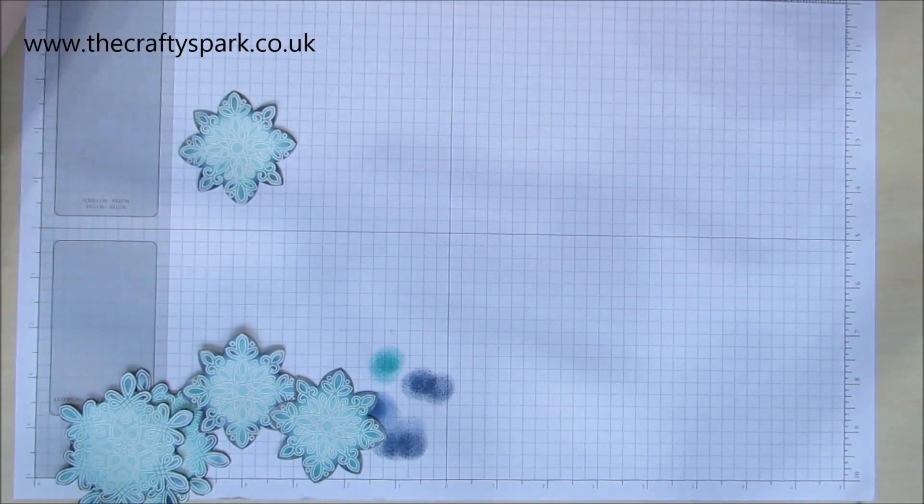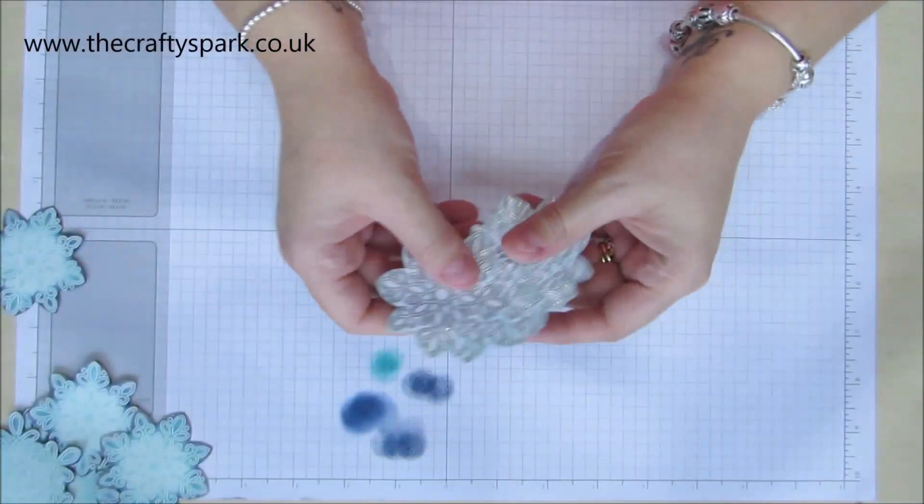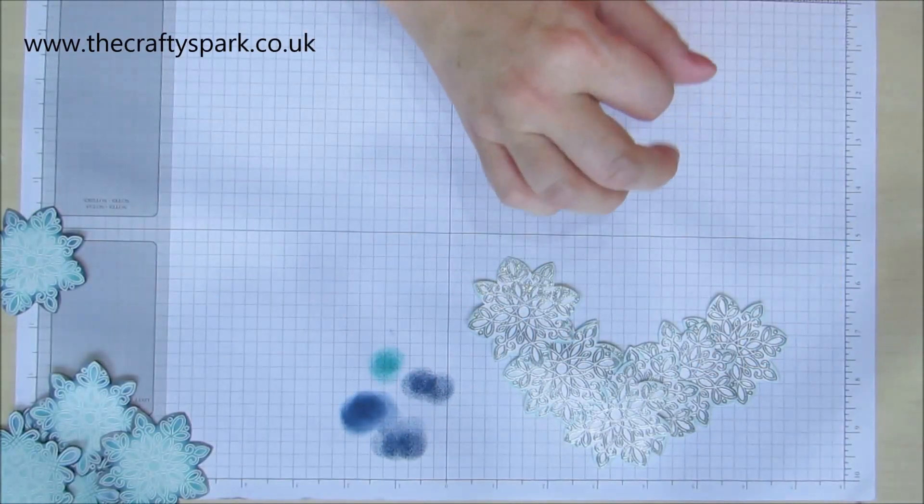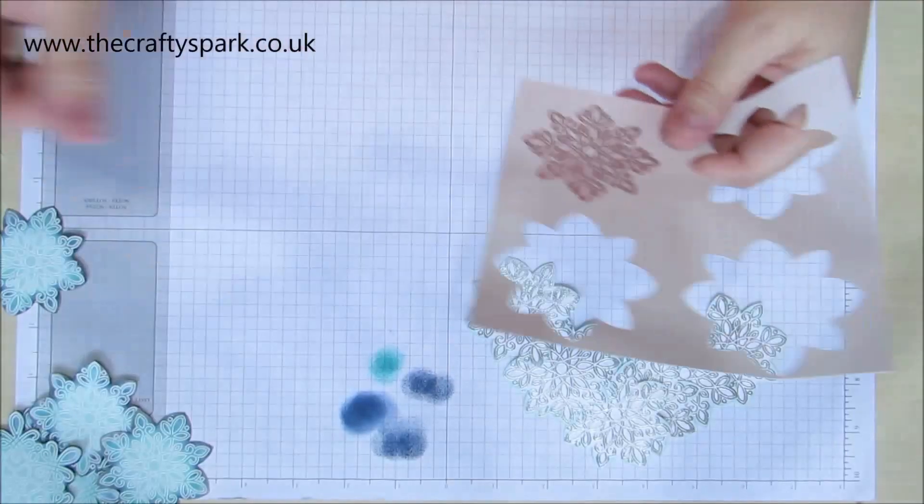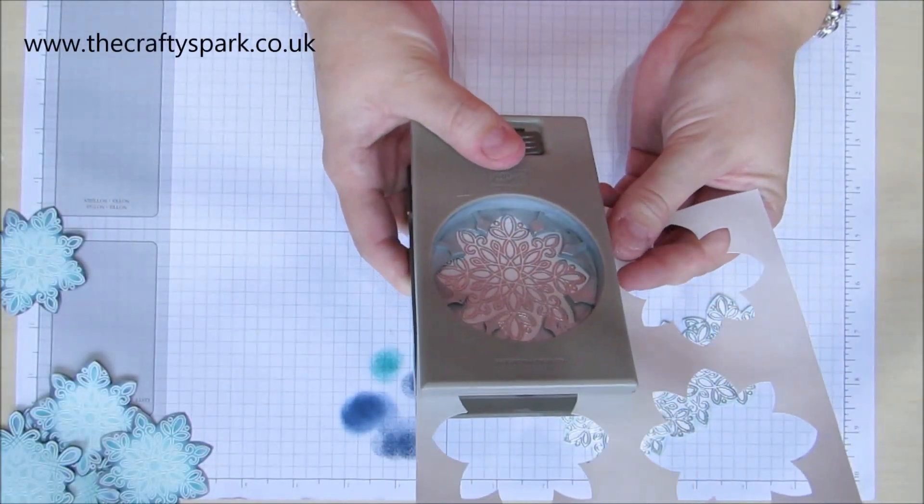Now I've also got some white ones. I did have one more white one to do. Where are we? There we are, there's our white one. So again, just need to punch that out.